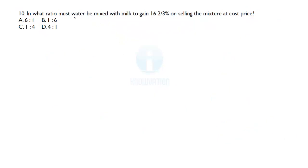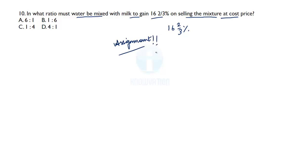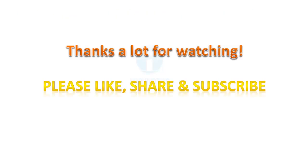The next assignment question: in what ratio must water be mixed with milk to gain 16⅔% on selling the mixture at cost price? This is the same type of question as the previous one, so please attempt it and comment your answers in the comment section. That brings us to the end of the session. I hope this was fruitful. Thanks for watching — please like, share and subscribe to Novation for more awesome content. All the best, bye!